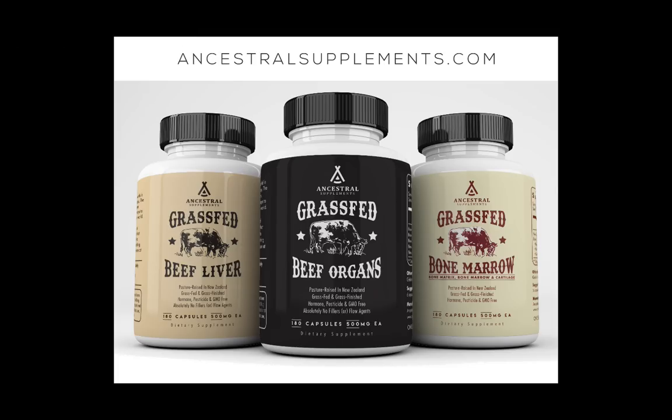This episode is brought to you by Ancestral Supplements Living Collagen. Our Native American ancestors believed that eating the organs from a healthy animal would support the health of the corresponding organ of the individual. Ancestral Supplements has a nose-to-tail product line of grass-fed liver, organs, living collagen, bone marrow, and more, all in the convenience of a capsule. For more information or to buy any of their products, go to ancestralsupplements.com.